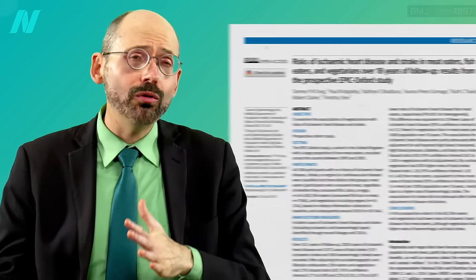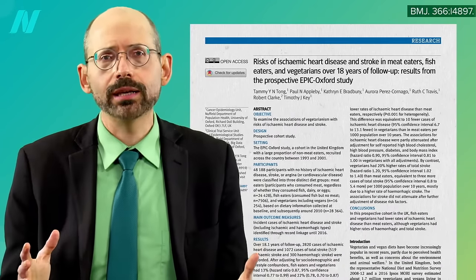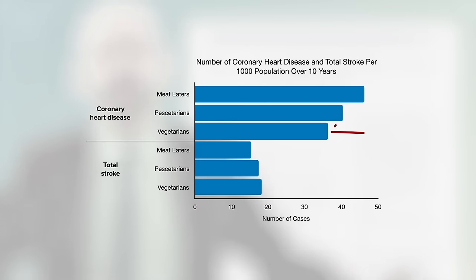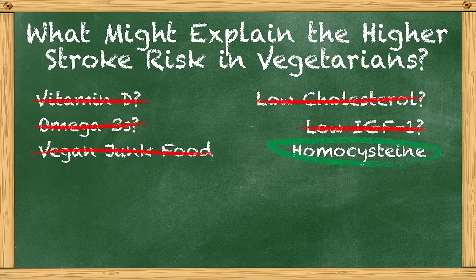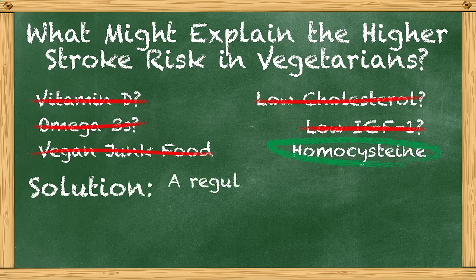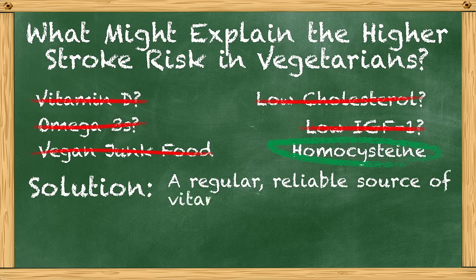The reason I did this whole video series all goes back to this study, which found that although the overall cardiovascular disease risk is lower in vegetarians and vegans combined, they appeared to be at slightly higher stroke risk. I went through a list of potential causes, arrived at elevated homocysteine, and the solution: a regular, reliable source of vitamin B12.